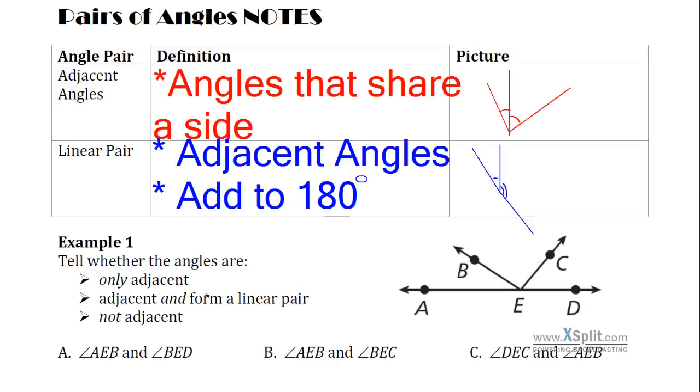So if we look at the example on the bottom of the page here, if I'm talking about angle AEB and angle BED, let's cover those. AEB would be this angle right here. BED would be from B to E to D, this angle right here. If we consider what they are, they're going to form a linear pair because they form a straight line together. So they are adjacent and they form a linear pair.